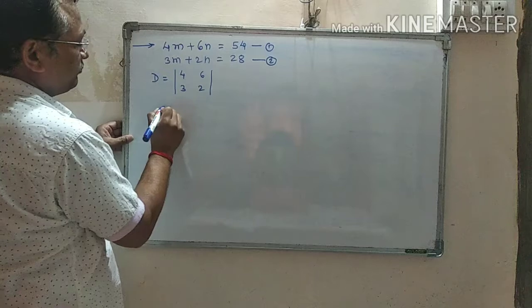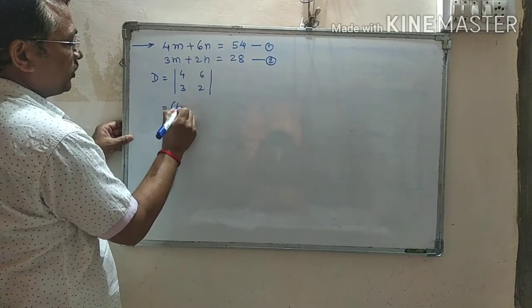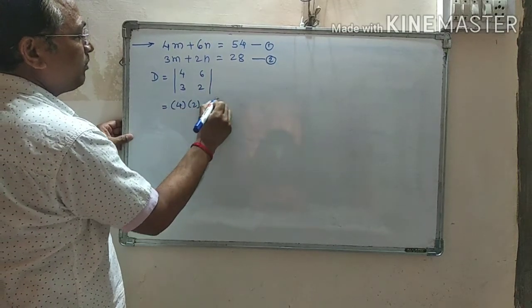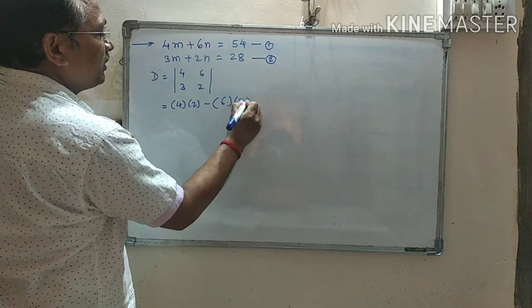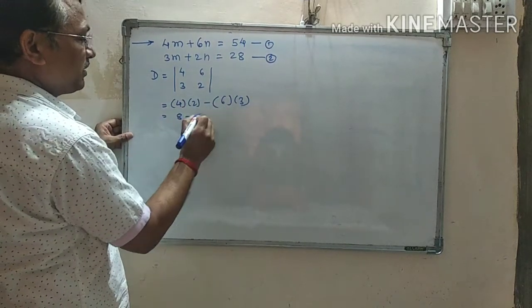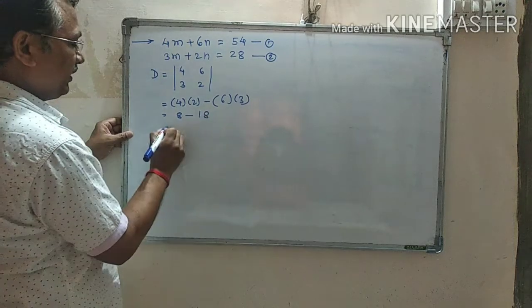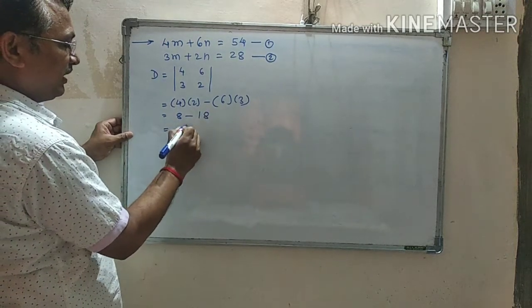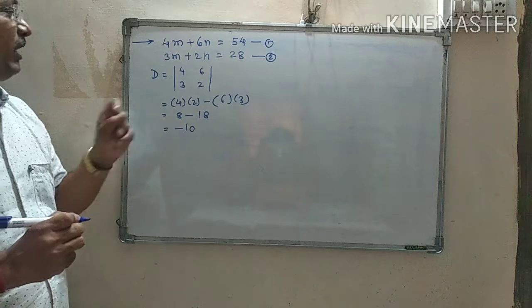It is equal to 4 into 2 minus 6 into 3. It is equal to 4, 2 is 8 minus 6, 3 is 18. It is equal to 8 minus 18, which is minus 10. We got D.